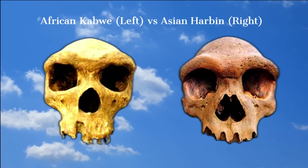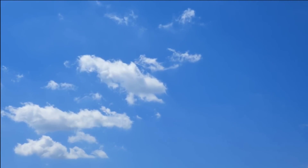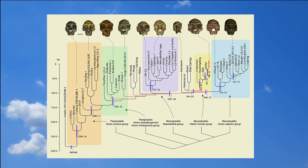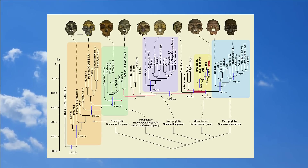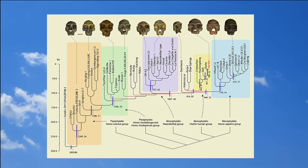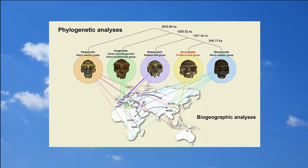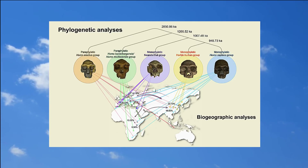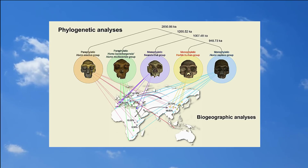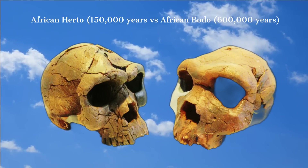As archaic hominins gave way to other hominin species, including our own Homo sapiens, the legacy of the Kabwe individual persisted as a piece of our ancestral puzzle. The Kabwe cranium is a tangible reminder of the resilience, adaptability, and intellectual capacity of our early ancestors. The cranial capacity of the Broken Hill skull has been estimated at 1,230 cubic centimeters. While the cranial volume overlaps with the range of Homo sapiens, other features such as the brain case morphology and prominent brow ridges are suggestive of older species.